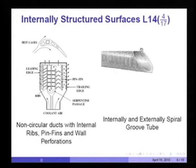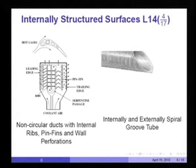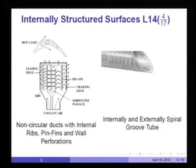A tube extensively used in the refrigeration and air conditioning industry has spiral grooves etched on both the inside and outside surfaces. These grooves are cut out of the copper tube and the near-surface structure is very tiny. The height of the grooves just exceeds the laminar sublayer in a turbulent flow. The purpose is to ensure that the sluggish laminar sublayer is continuously disrupted, thereby enabling enhanced heat transfer. The same is the purpose of internal rib roughnesses.